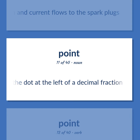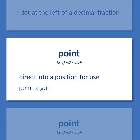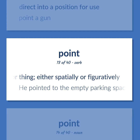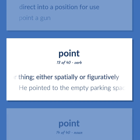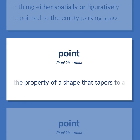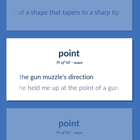Point: The dot at the left of a decimal fraction. Direct into a position for use — point a gun. Indicate a place, direction, person, or thing, either spatially or figuratively — he pointed to the empty parking space. The property of a shape that tapers to a sharp tip. The gun muzzle's direction — he held me up at the point of a gun.